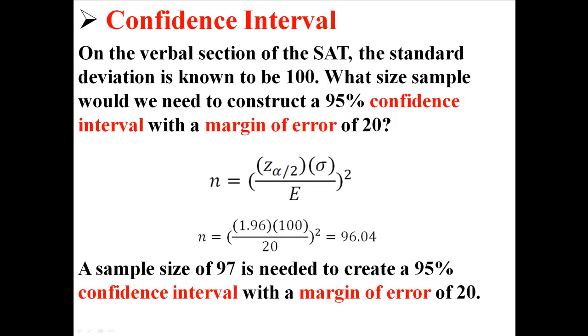When I put everything in, I found an n of 96.04. And we're going to round that up to 97 because 0.04 people doesn't make any sense. So we can say that a sample size of 97 is needed to create a 95% confidence interval with a margin of error of 20.